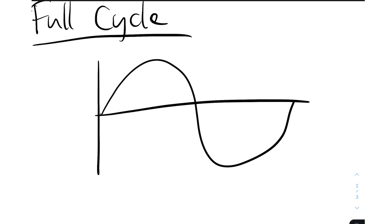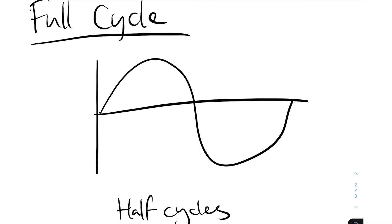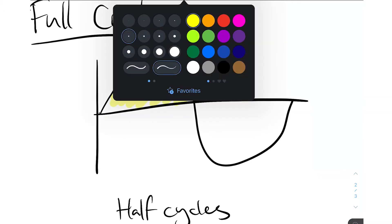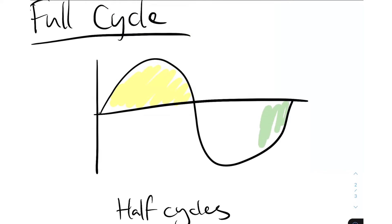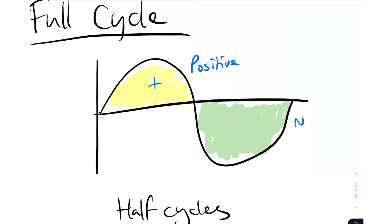We also have what are called half cycles. A half cycle is this here — that's one half cycle, and here's another half cycle. We detail these further by saying that this is the positive half cycle, and obviously this is the negative half cycle.